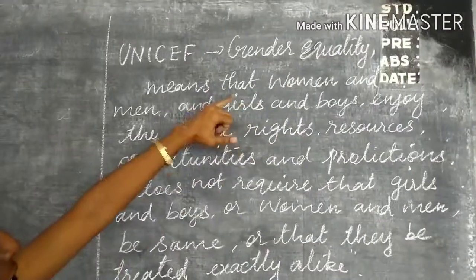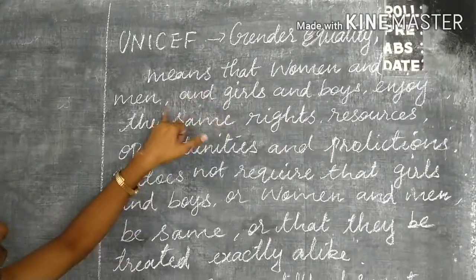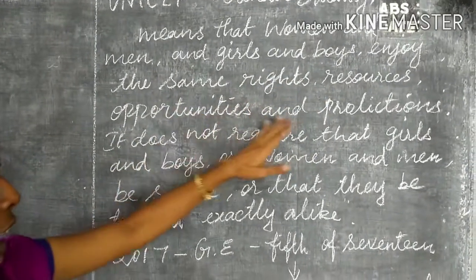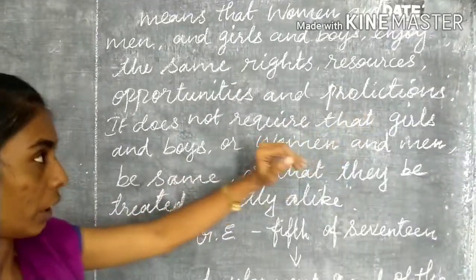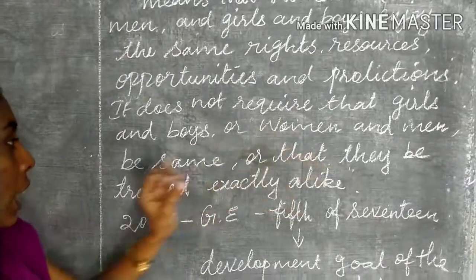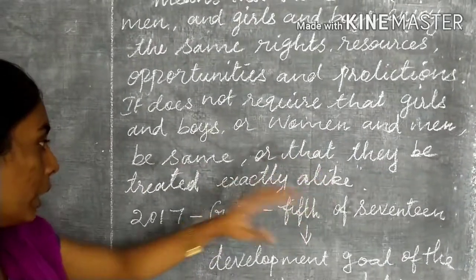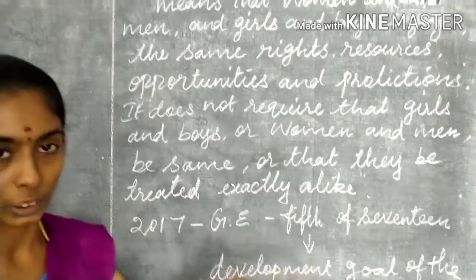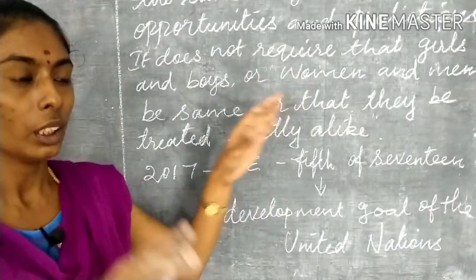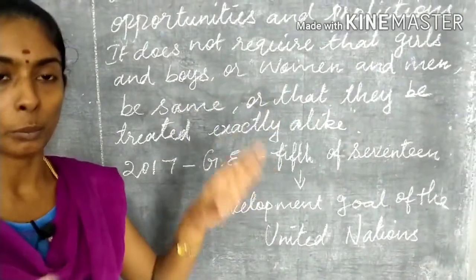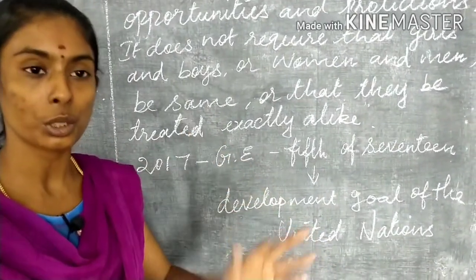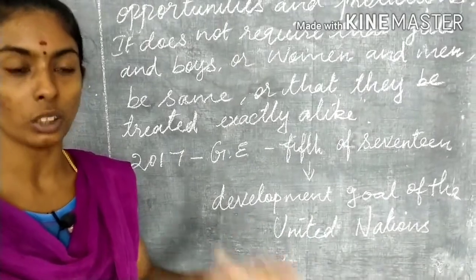According to UNICEF, gender equality means that women and men, and girls and boys, enjoy the same rights, resources, opportunities, and protections. It does not require that girls and boys or women and men be treated exactly alike, but every announcement or opportunity must be accessible without discrimination based on male or female.